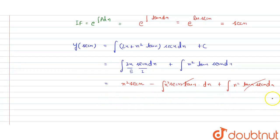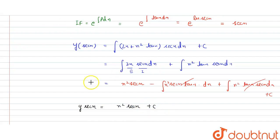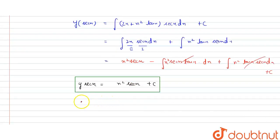So the integral simplifies, and the solution becomes y·sec(x) = x²·sec(x) + C. Now applying the initial condition y(0) = 1: when x = 0, y = 1, so 1·sec(0) = 0² + C, giving 1 = C.